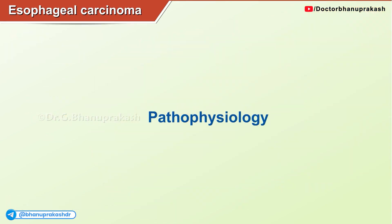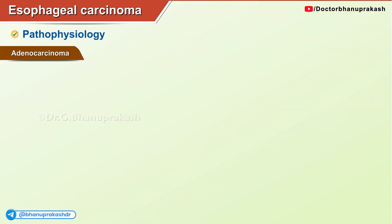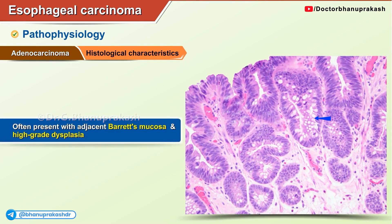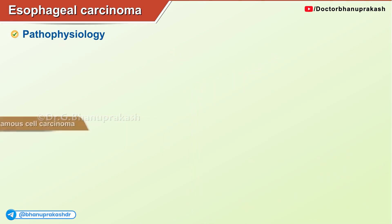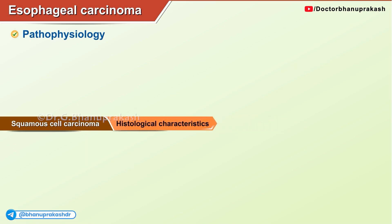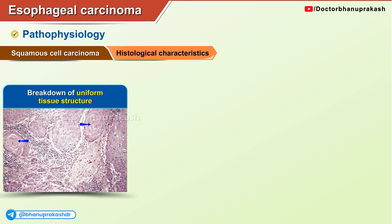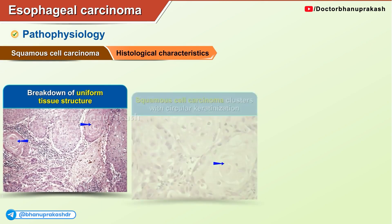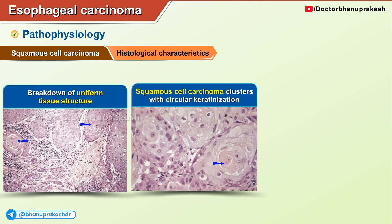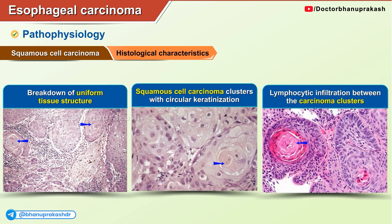Pathophysiology: adenocarcinoma has histological characteristics that often present with adjacent Barrett mucosa and high-grade dysplasia. Squamous cell carcinoma histological characteristics include breakdown of uniform tissue structure, squamous cell carcinoma clusters with circular keratinization, and lymphocytic infiltration between the carcinoma clusters.